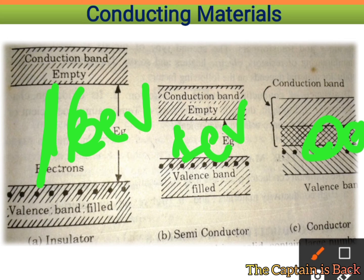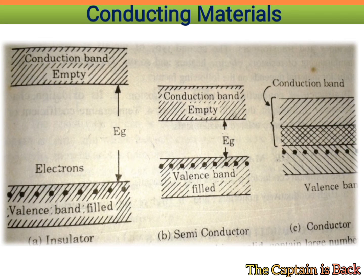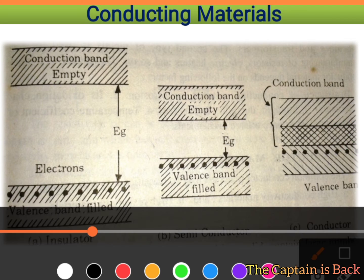In conductors, the free valence electrons already reach the conduction band because the bands are overlapped. You can see this overlap in the diagram — electrons can easily reach the conduction band and thus conduction takes place.